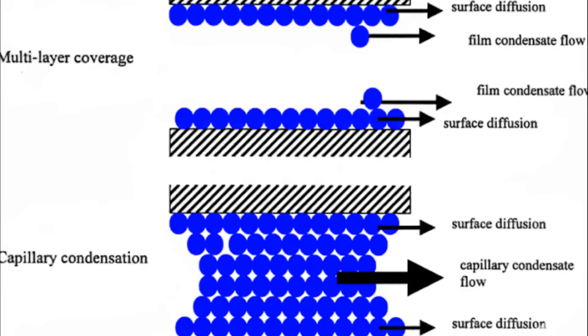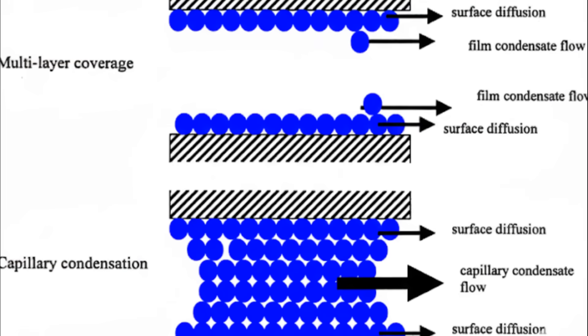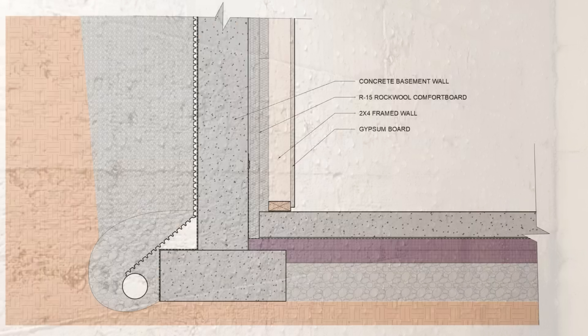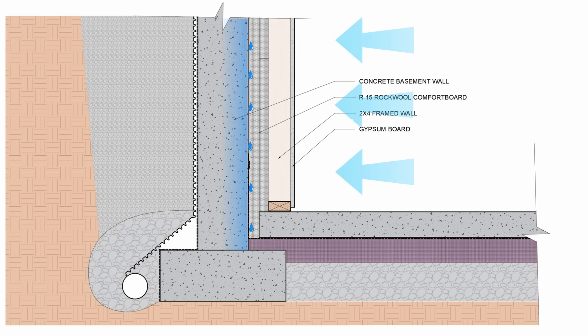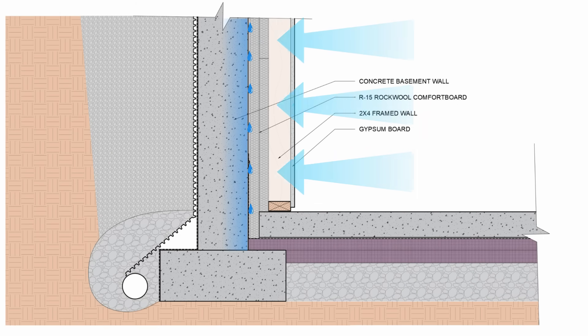Again, this is first going to appear as capillary condensation, and then you'll start to see it beading off the surface of that concrete. We are basically increasing the moisture content of that concrete if we don't stop warm, moisture-laden air from the interior from coming into contact with that surface.